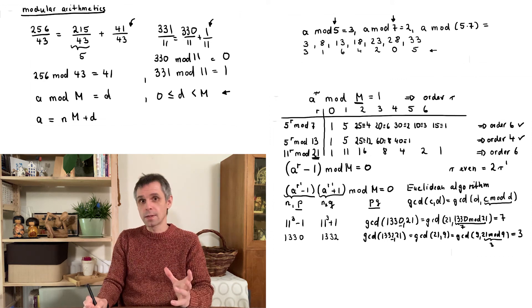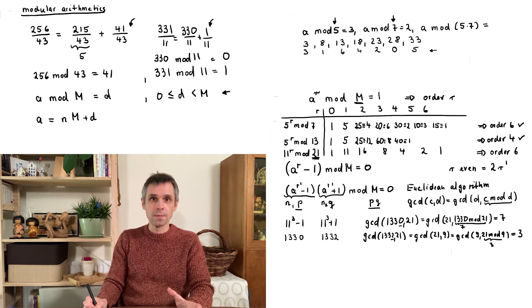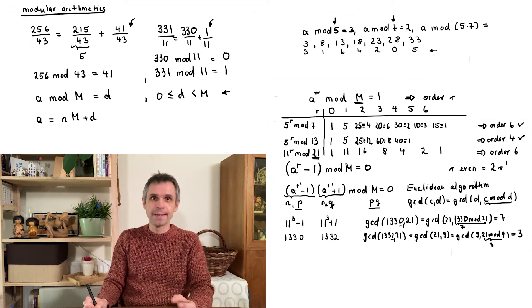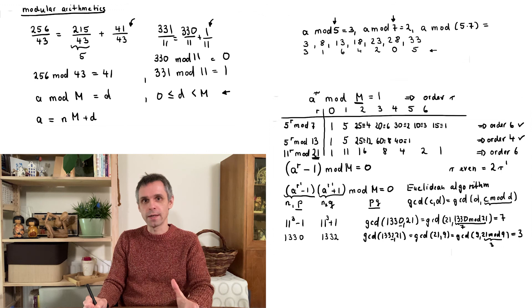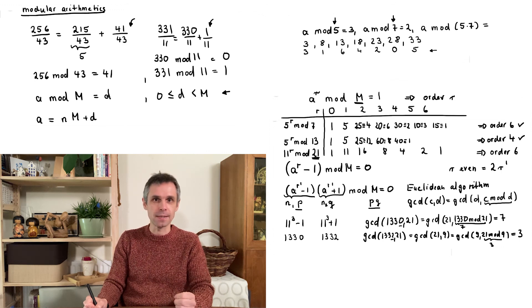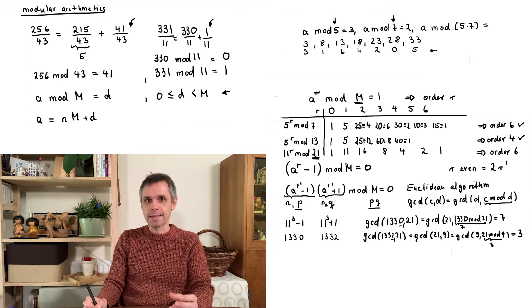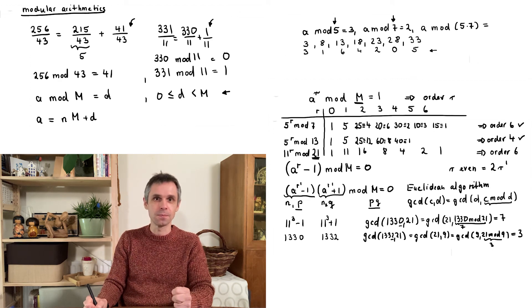The Euclidean algorithm remains very efficient even with very large numbers. This tells us that prime number factorization and order finding have really the same level of complexity. So let us turn to our next step and see how order finding can be implemented on a quantum computer.